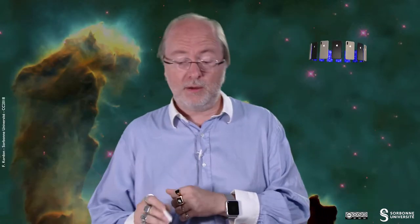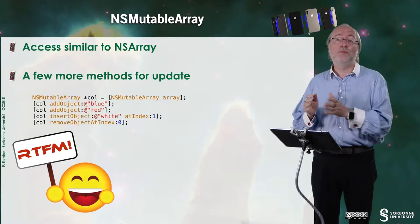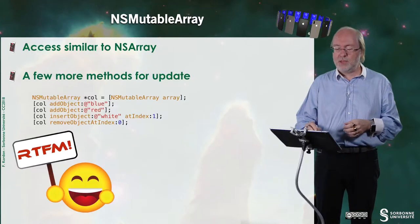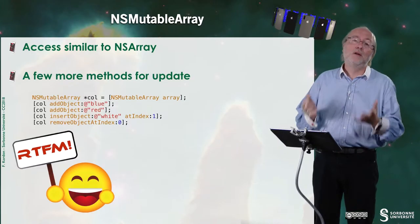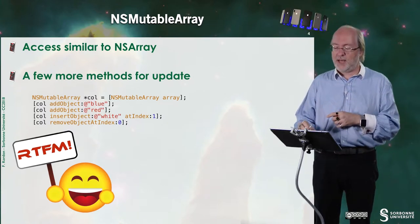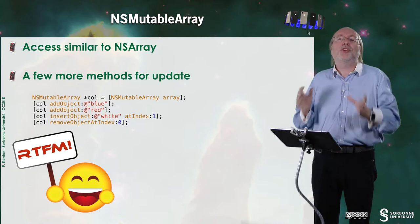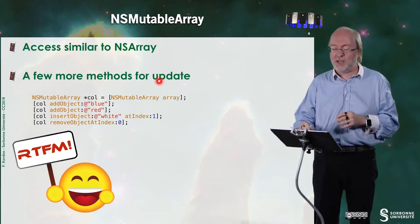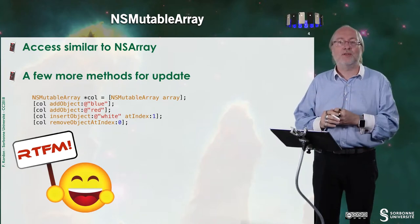As I told you, you have a mutable variant of array, the class is named NSMutableArray. For the access, it's totally similar to NSArray, but you have four more methods that allow you to update the variable. So let's imagine that here, I create a mutable array that is col. Here, I initialize it with nothing in it. So array is, once again, a class method. Okay?